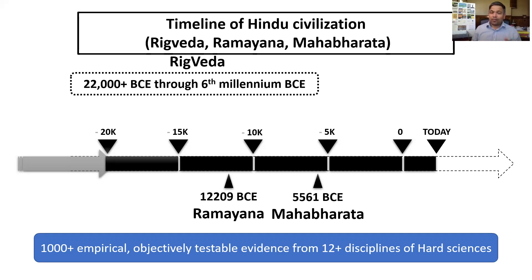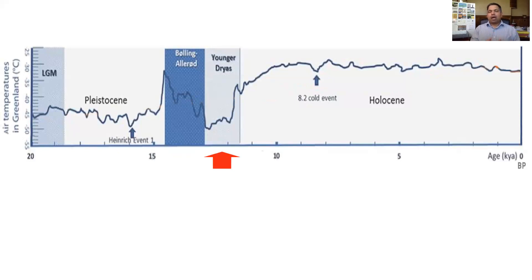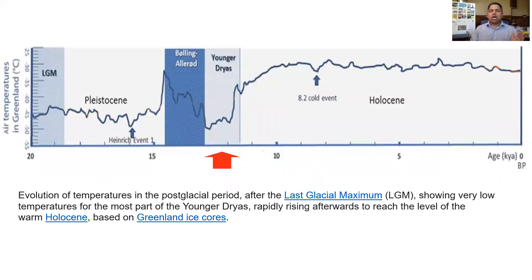For the context of Younger Dryas, the Ramayana and the Mahabharata, what you are seeing is the graph of temperature fluctuations in the ice cores of Greenland. Look at the relative change of this graph. Do not focus on the absolute temperatures on the y-axis. These are the temperatures of Greenland ice cores taken over time and correlated with the timeline.